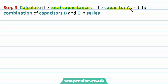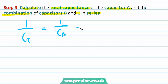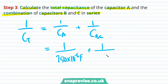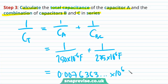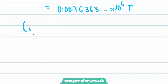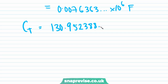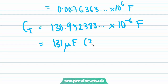Step 3: calculate the total capacitance of capacitor A and the combination of capacitors B and C in series. We take the reciprocal: 1/Ct = 1/CA + 1/CBC = 1/(250 × 10⁻⁶) + 1/(275 × 10⁻⁶). Therefore the total capacitance is equal to the inverse of this sum, which is 130.95 × 10⁻⁶ F, equal to 131 µF to three significant figures.